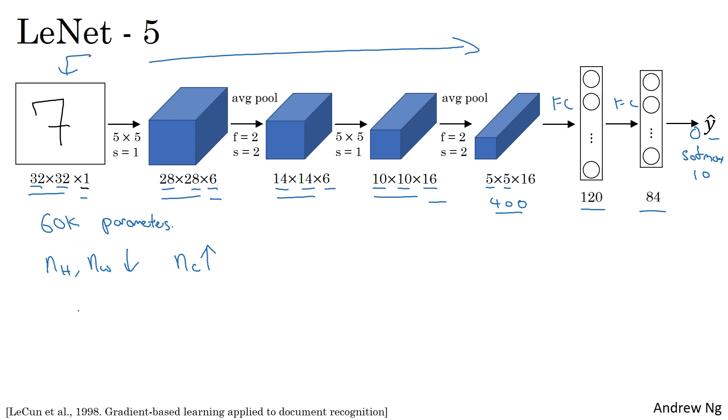You went from 32 by 32 to 28 to 14 to 10 to 5, whereas the number of channels tends to increase. It goes from 1 to 6 to 16 as you go deeper into the layers of the network. One other pattern you see in this neural network that's still often repeated today is that you might have one or more conv layers followed by a pooling layer, and then one or sometimes more than one conv layer followed by a pooling layer, and then some fully connected layers, and then the output. This type of arrangement of layers is quite common.